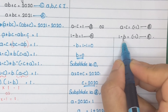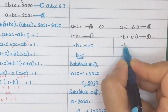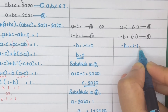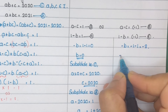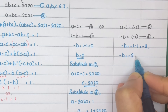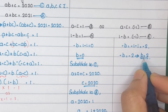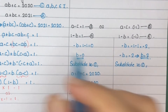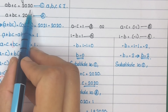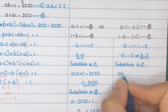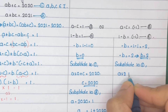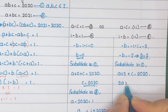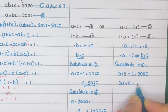Consider equation 6: 1 minus B equals minus 1. So minus B equals minus 1 minus 1, giving minus B equals minus 2, which implies B equals 2. Substitute B equals 2 into equation 1: A times 2 plus C equals 2020, so 2A plus C equals 2020. Mark this as equation 7.